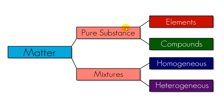Now that we understand the difference between pure substances and mixtures, let's talk about pure substances some more. As you can see from this graph, a pure substance can be broken up into two different things: elements and compounds.